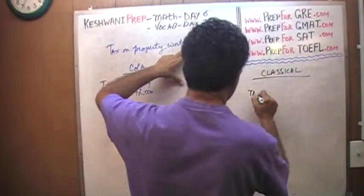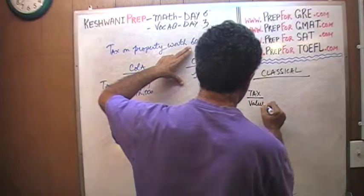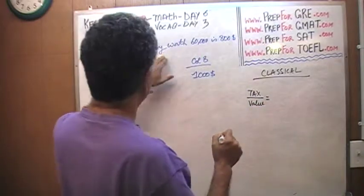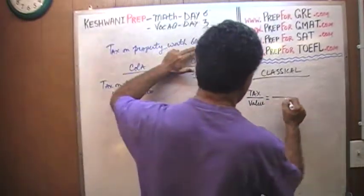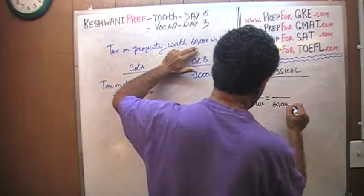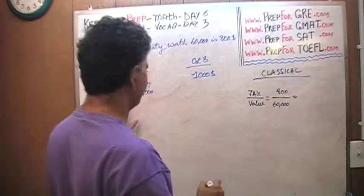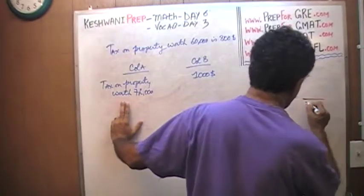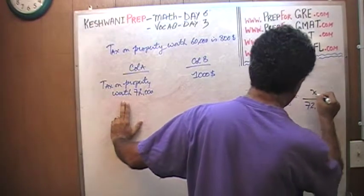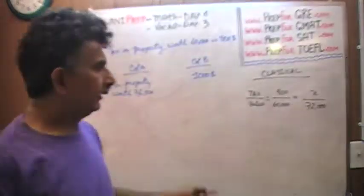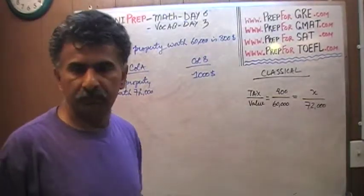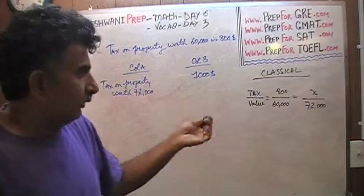The classical way would be to set it up as a proportion. That's what most people will do. They will put down tax versus value. And we know the tax on the property worth $60,000 is $800, and that has to be same as the tax on $72,000 versus the unknown quantity.